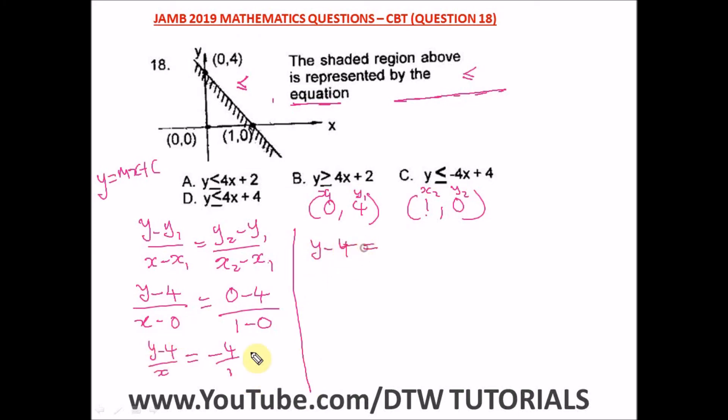Taking minus 4 to this side, we have y equals minus 4x plus 4. So this is our final equation.